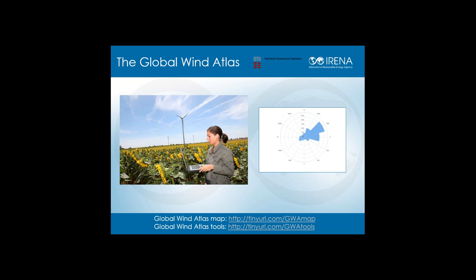The Global Wind Atlas was initiated in the framework of the Clean Energy Ministerial's multilateral solar and wind working group, with strong support from the governments of Spain, Germany, and Denmark. It is the most detailed and accurate wind atlas available without cost in the public domain. It provides wind resource data so detailed that it can be used for pre-feasibility studies. Prior to this release, wind data was only publicly available at 10-kilometer resolution or poorer, which resulted in underestimations of true wind potential, increased risk, and increased costs for wind energy planners. The dataset also uses micro-scale modeling to capture wind speed variability on a small scale.